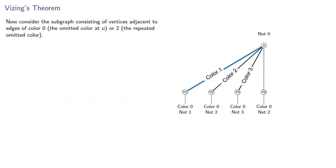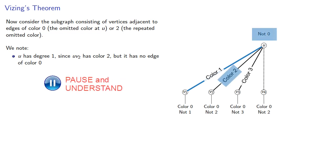Now consider the subgraph consisting of the vertices adjacent to edges of color 0, the omitted color at u, or 2, the repeated omitted color. We note that u itself has degree 1, since uv2 has color 2, but it has no edge of color 0.